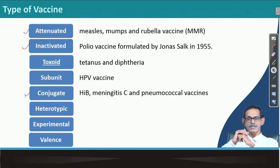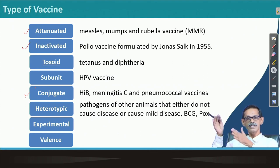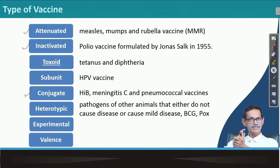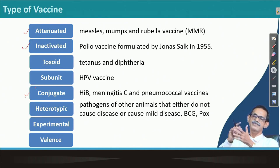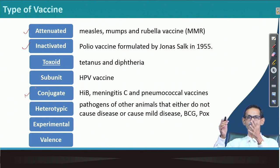Heterotypic vaccine means giving pathogens from other animals. That is how immunization was first discovered — Jenner used the cowpox virus to treat the human pathogen smallpox virus. That was heterotypic. Pathogens of other animals either do not cause disease in humans or cause only mild disease. BCG is the vaccine for Mycobacterium tuberculosis — it was very effective in certain countries but not at all effective in others for some reason, and new experimentation is ongoing.